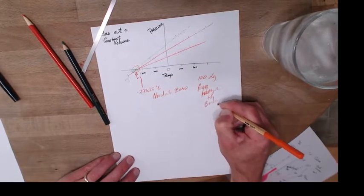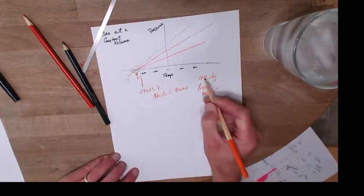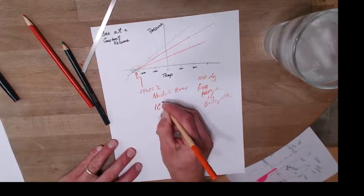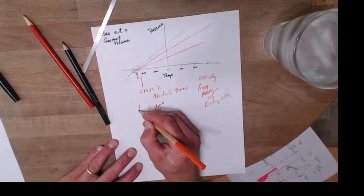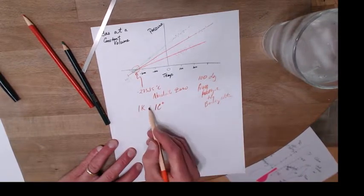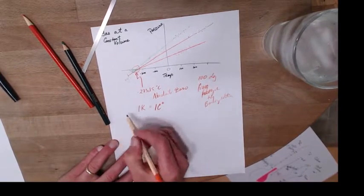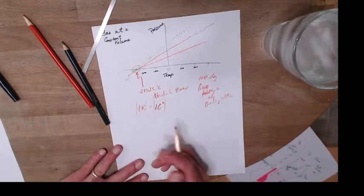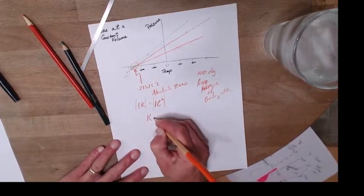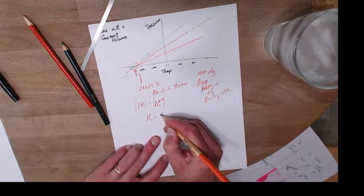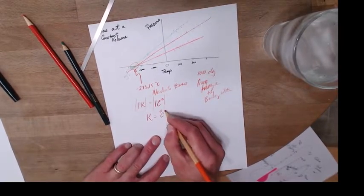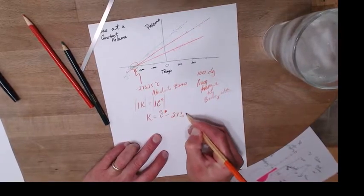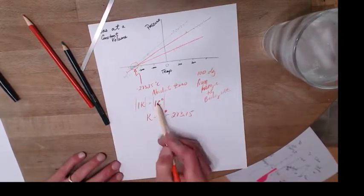So he liked the Celsius degree. And so one Kelvin is the same size as one, the magnitudes are the same. But Kelvin is Celsius, degrees Celsius, minus 273.15.